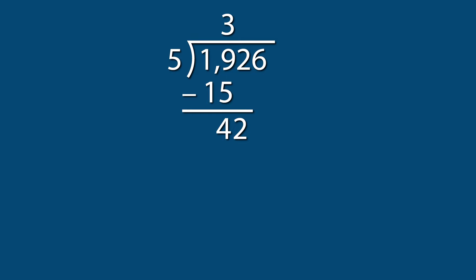Since the new number is 42, how close can we get to 42 without going over? 5 times 8 equals 40, so we put 8 in the quotient over the tens place and put 40 under 42. 42 minus 40 equals 2. Then we bring down the 6. Since the new number is 26, how close can we get to 26 without going over? 5 times 5 equals 25, so we put 5 in the quotient over the ones place and put 25 under 26. 26 minus 25 equals 1, which gives us a remainder of 1.